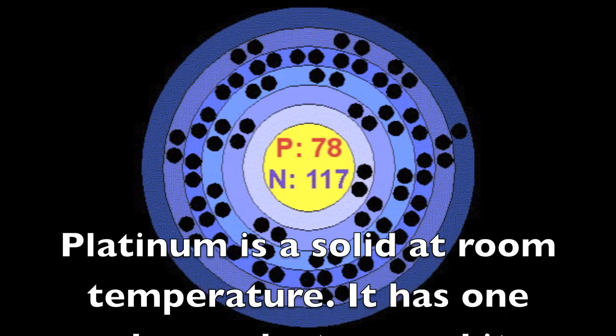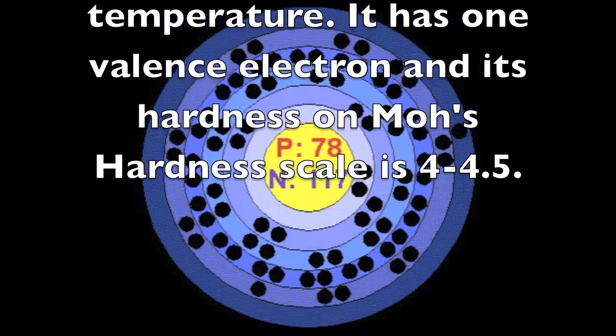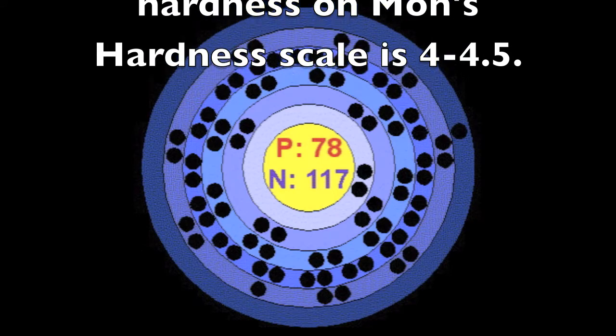Platinum is a solid at room temperature. It has one valence electron, and its hardness on Mohs hardness scale is 4 to 4.5.